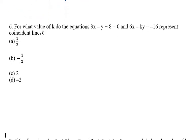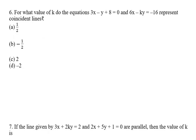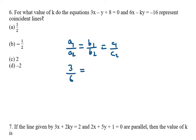Question number six: for what value of k do the equations 3x − y + 8 = 0 and 6x − ky = −16 represent coincident lines? For coincident lines, a1/a2 = b1/b2 = c1/c2. Here a1 = 3, a2 = 6, b1 = −1, b2 = −k. We also need to rewrite the second equation in standard form.